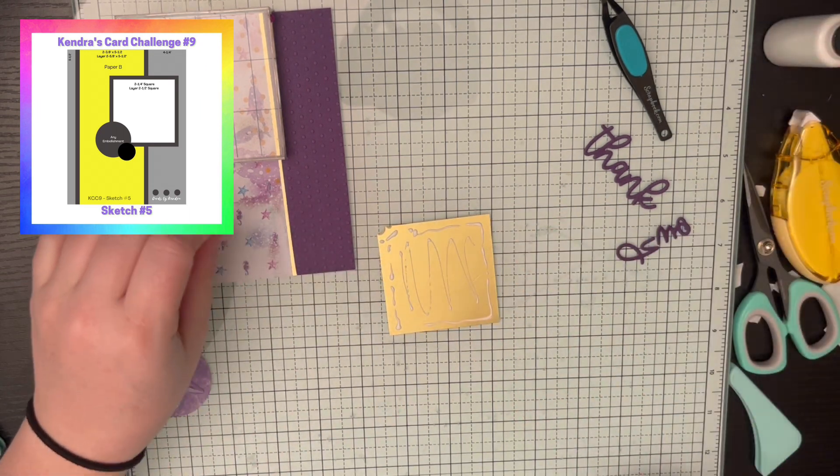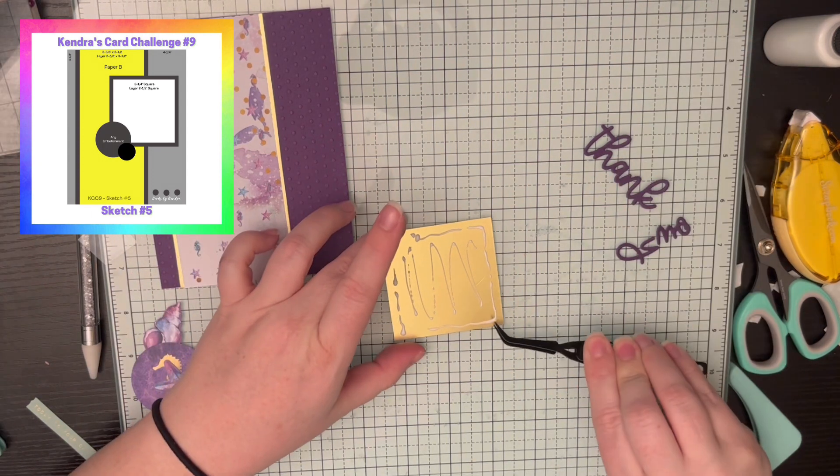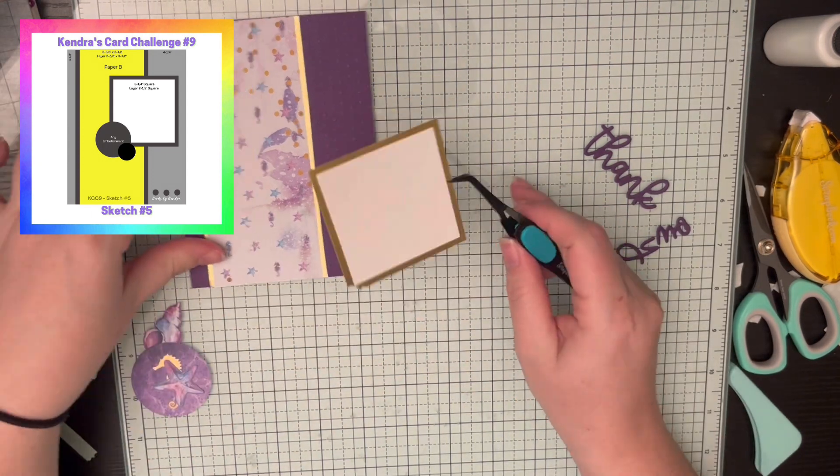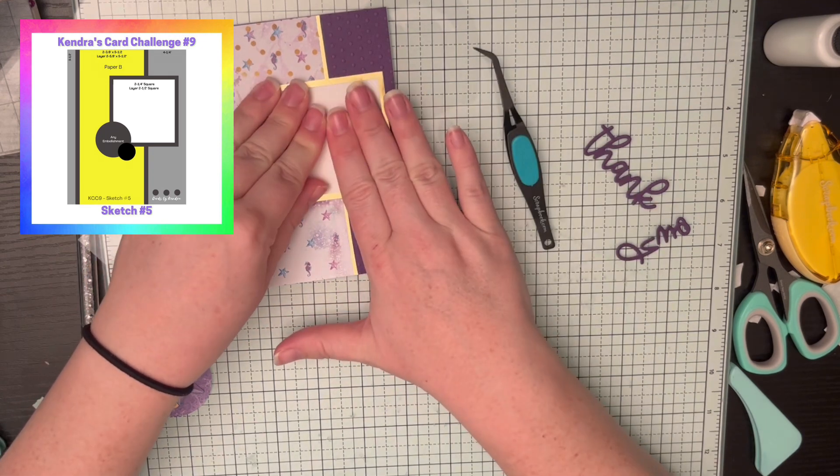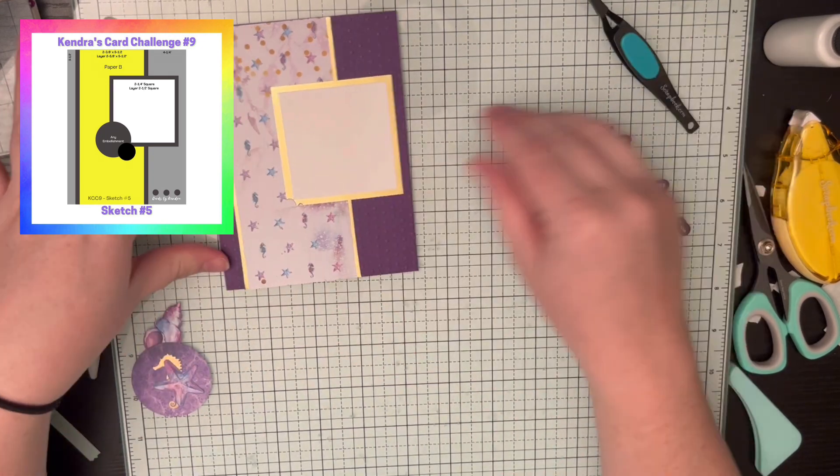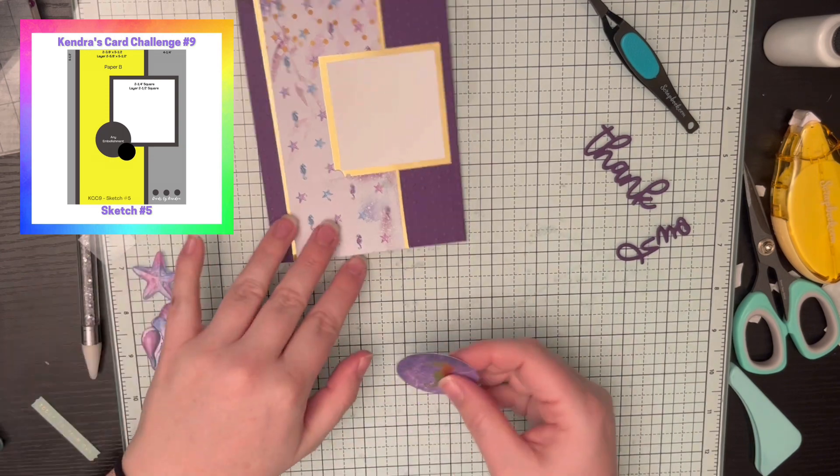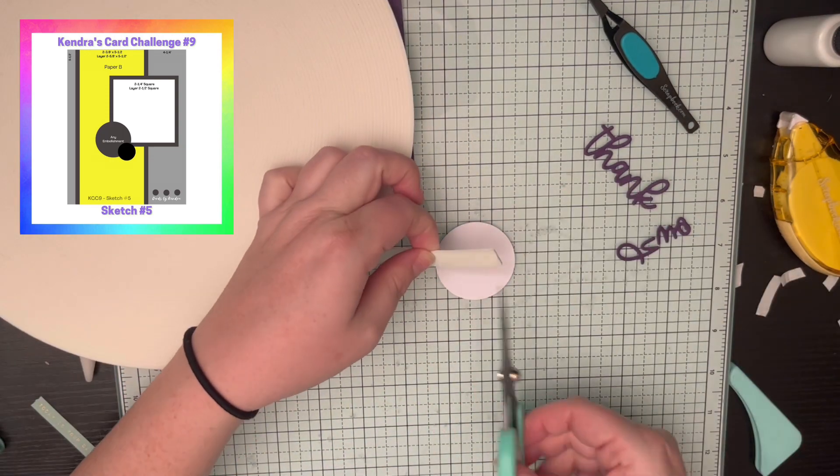You also see that at the edge of this gold mat, it looks, pieces have been cut out of it. That's actually going to be hidden here in a minute. So your mats don't have to be perfect. They don't. Use what you have. Use your scraps. That's what you need to do.